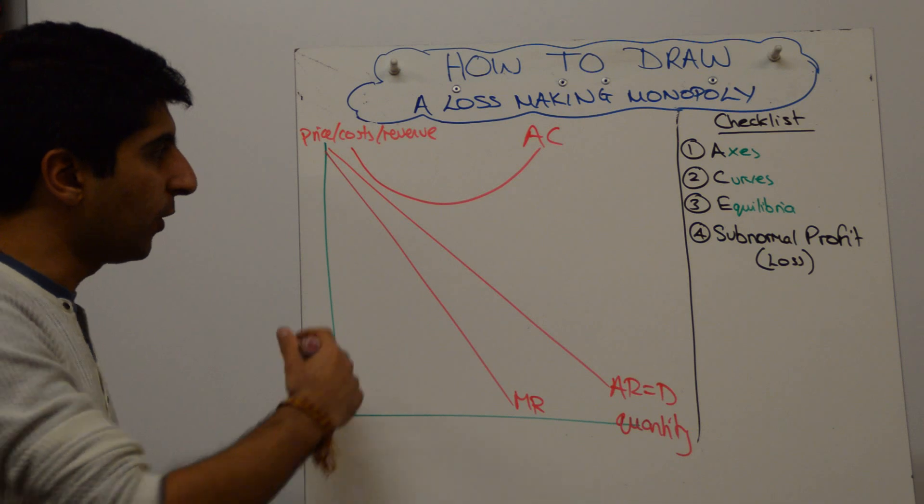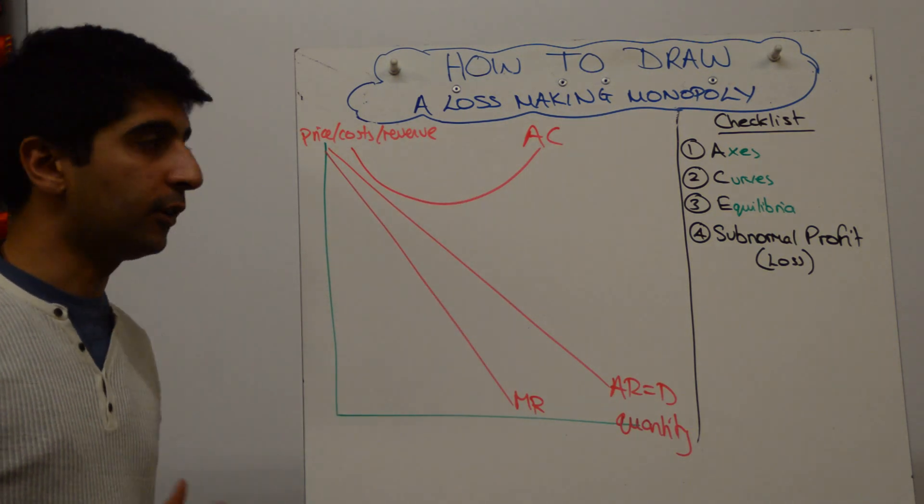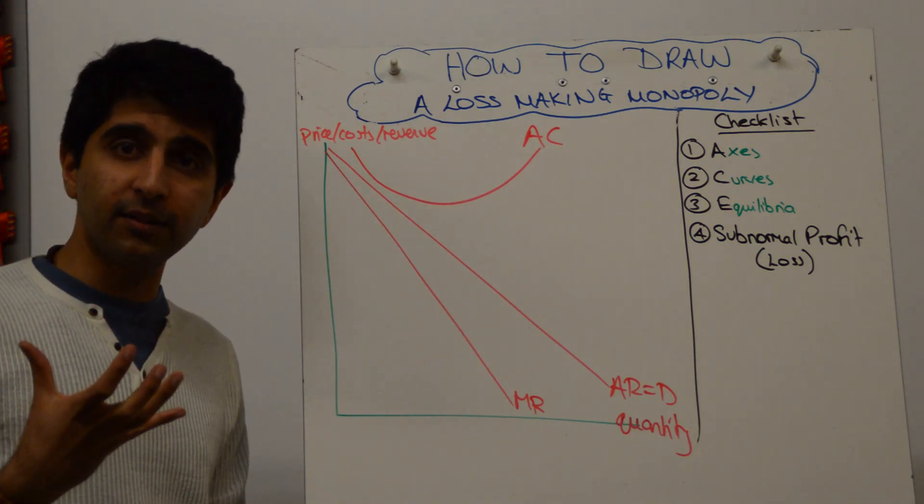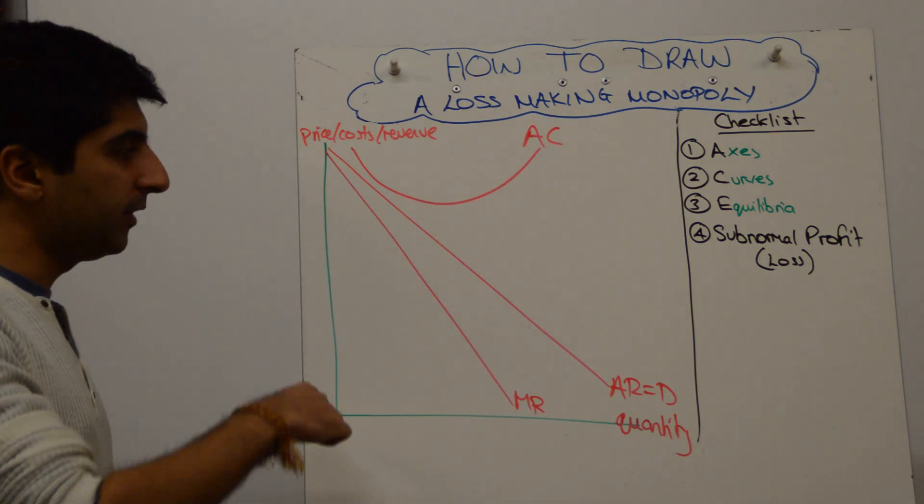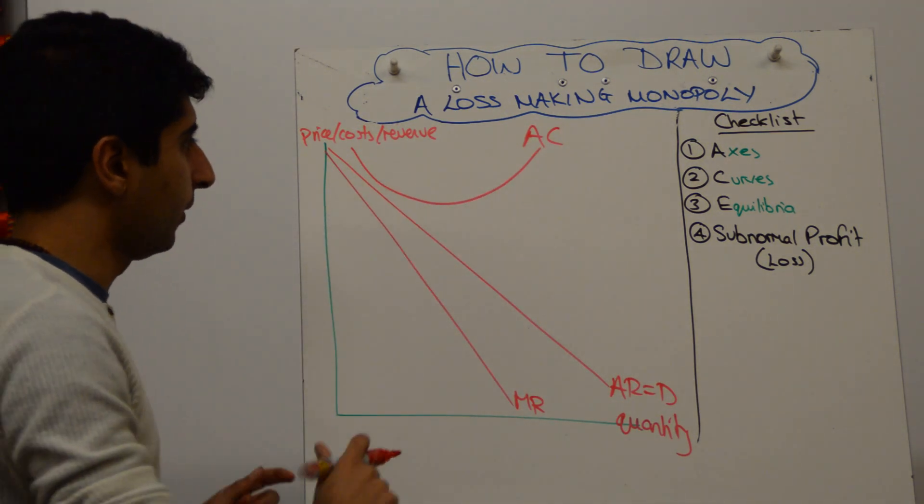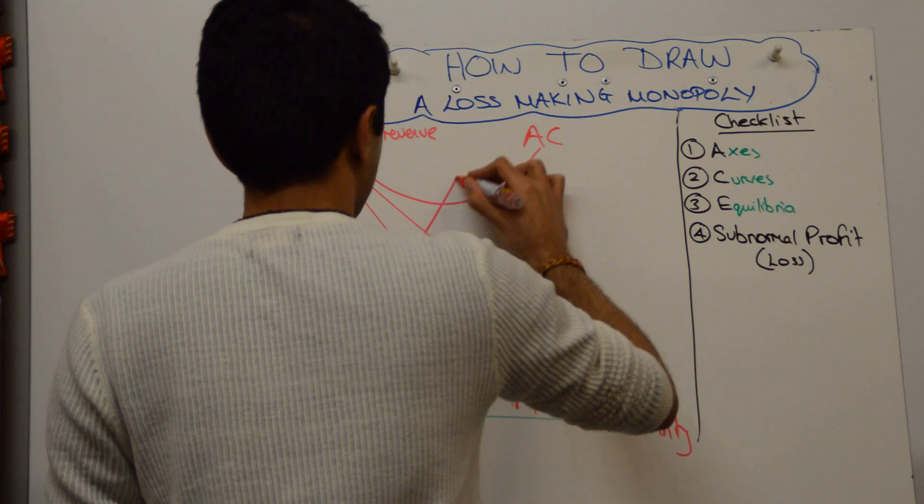And then your MC, which needs to cut AC at its lowest point. So AC is sort of a smiley face, same shape, you just draw it in a slightly different position. MC is sort of like a tick, cutting AC at its lowest point, like that.